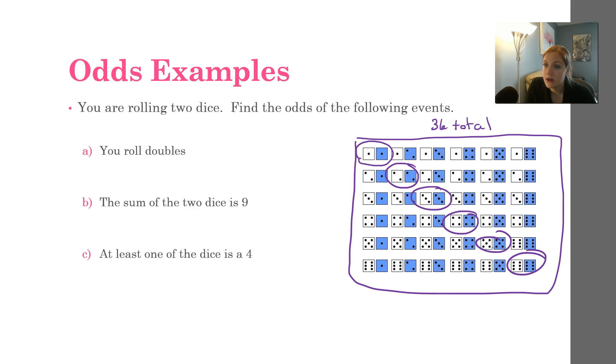5, 5, 4, 4. Oh, I see there's an error here. This should be a 5, 6, sorry. That one has a little error. But anyway, 6, 6, 5, 5, 4, 4, 3, 3, 2, 2, and 1, 1. So there are 1, 2, 3, 4, 5, 6, 6 ways to roll a double.